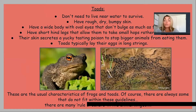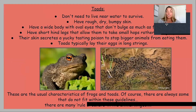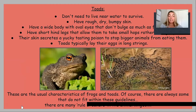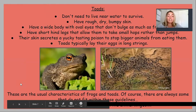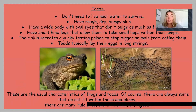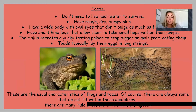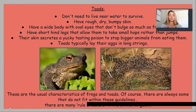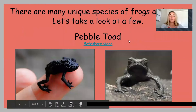Toads don't need to live near water to survive. They have very rough, dry, bumpy skin. They have a wide body with oval eyes that don't bulge as much as a frog's. They have short hind legs that allow them to take small hops rather than jumps. Their skin secretes a yucky-tasting poison to stop bigger animals from eating them. Toads typically lay their eggs in long streams. These characteristics have some rule-breakers in the animal kingdom, but for the most part those are the key differences.